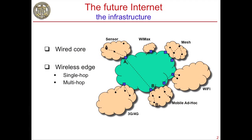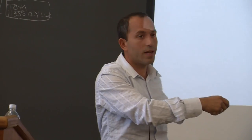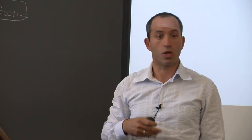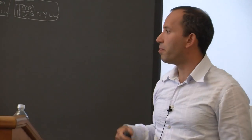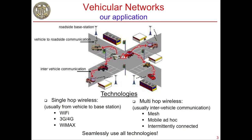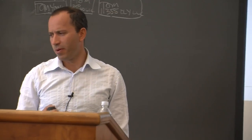Beyond single-hop, there is the paradigm of wireless multi-hopping, where the wireless path is longer than a single hop. You could connect to an access point, which connects to another access point, eventually reaching the wired network. In a vehicular network, you might be driving a car with no nearby roadside unit, but other cars can serve as relays, connecting you to a base station further away. Technologies like 3G, 4G, and Wi-Fi are single-hop; mesh, mobile ad hoc, and sensor networks are multi-hop.